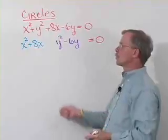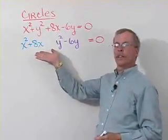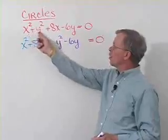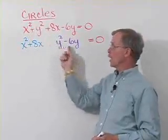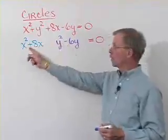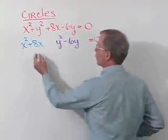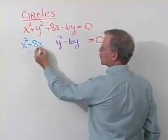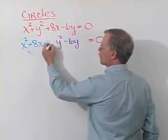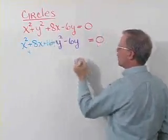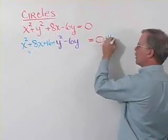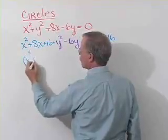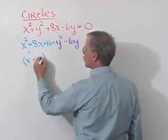What we're going to do to try to make it look like the general form that we were looking at a moment ago is to complete the square twice. We're going to complete the square over here. 8 divided by 2 is 4. 4 squared is 16. So we'll have to add 16 to both sides to complete that square. And then we'll have x plus 4 squared.